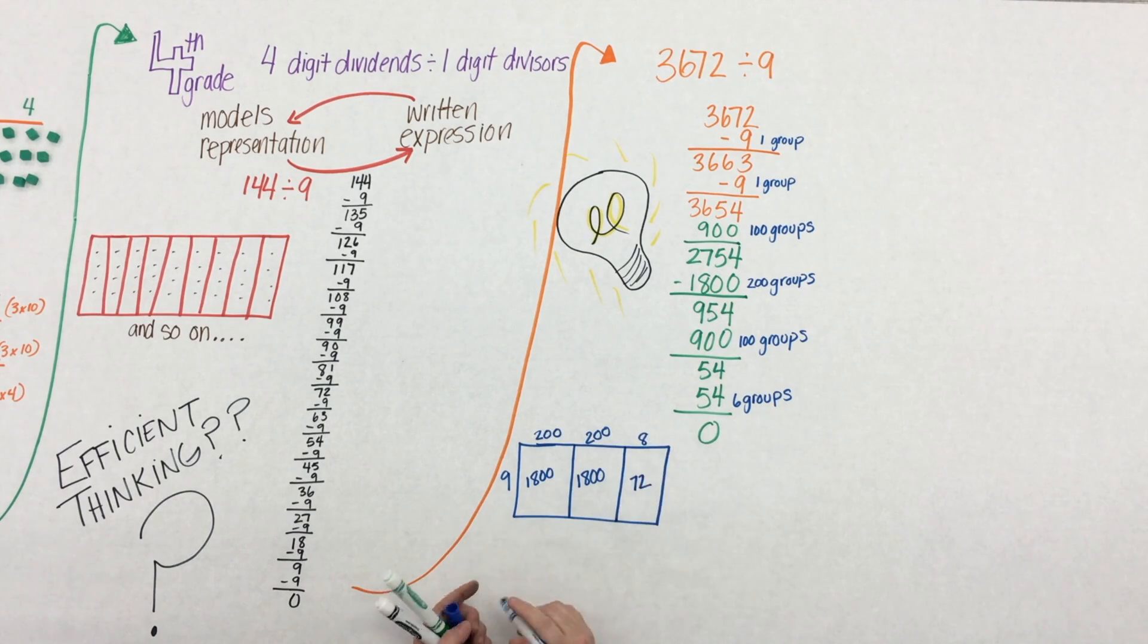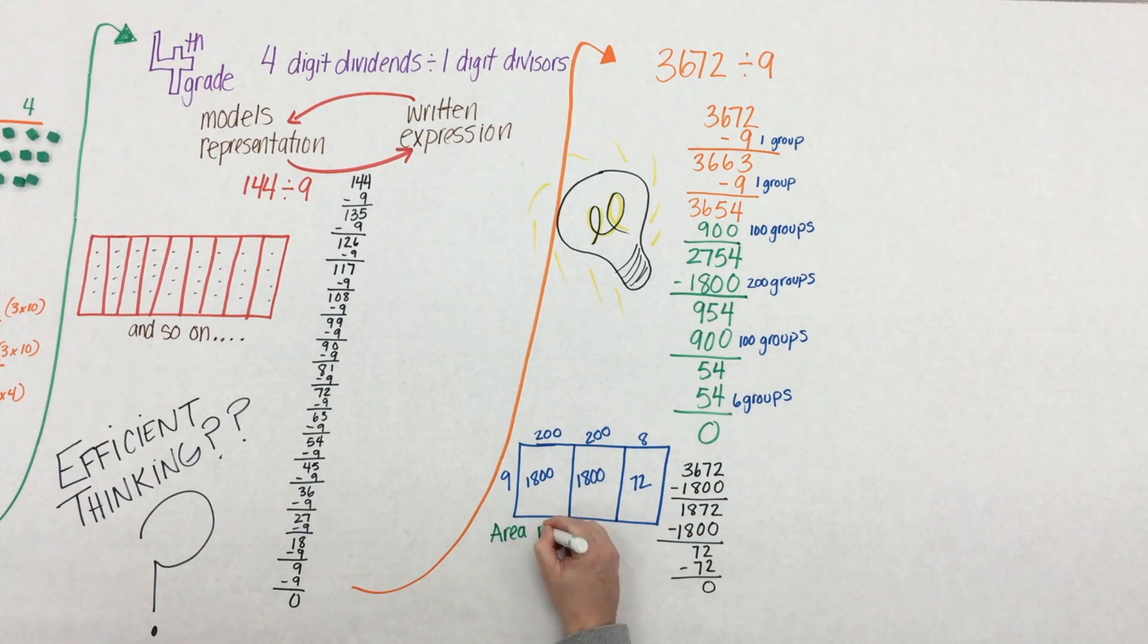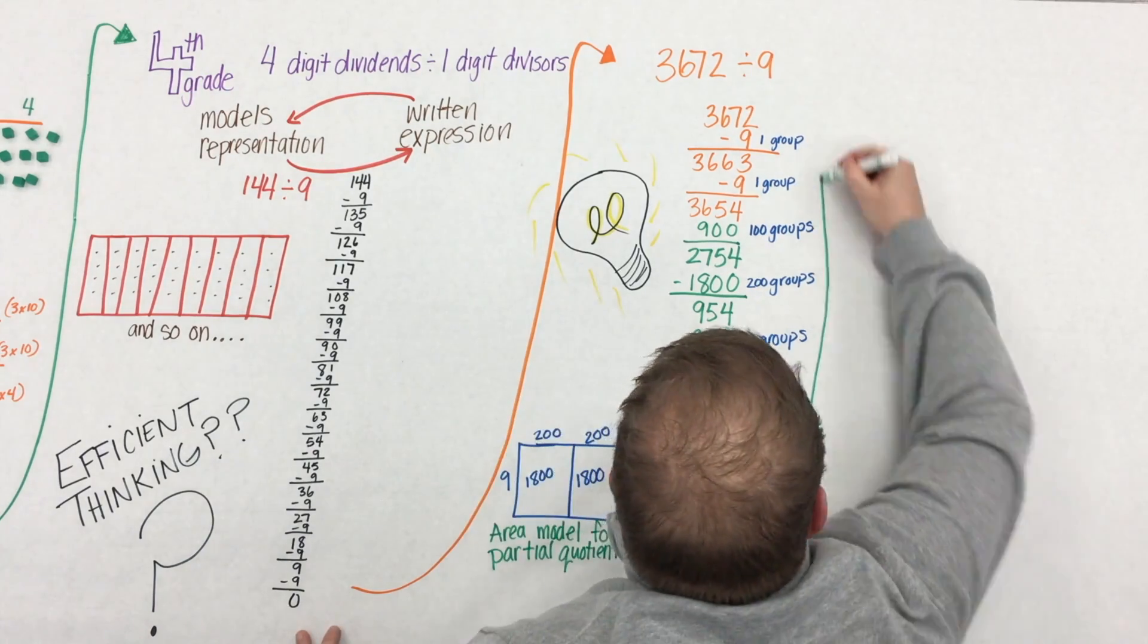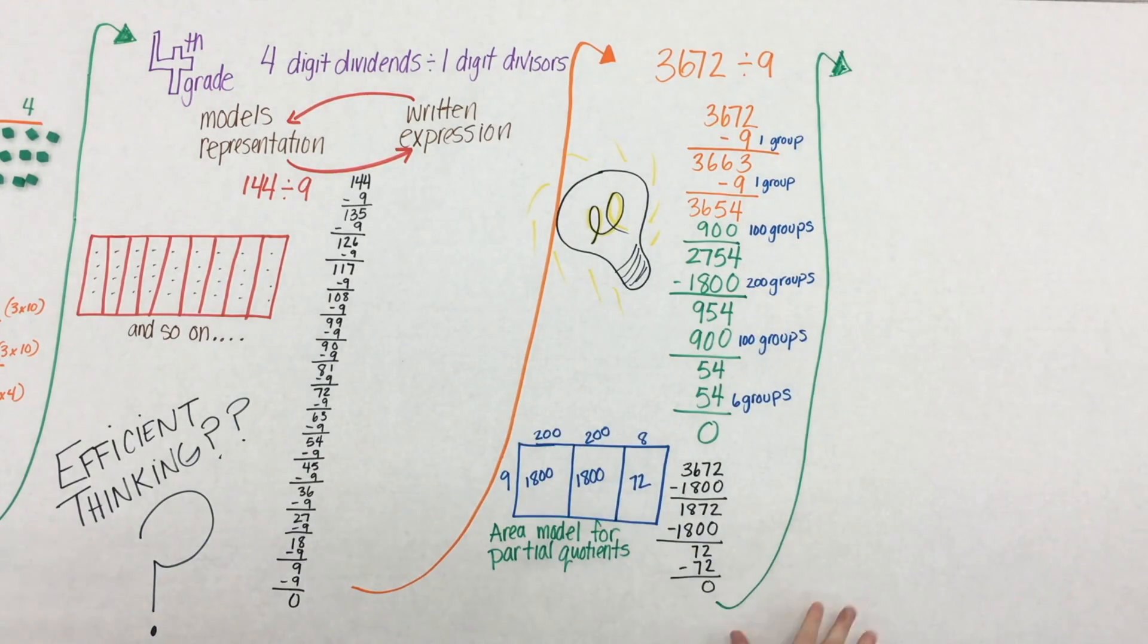Students have to make sense of the mathematics, and we can't tell them what to do. So here, they're removing their partial quotients. So from the expression, they go ahead and create an area model. And what's beautiful about this area model is that it connects back to multiplication, except it's the area model for partial quotients.